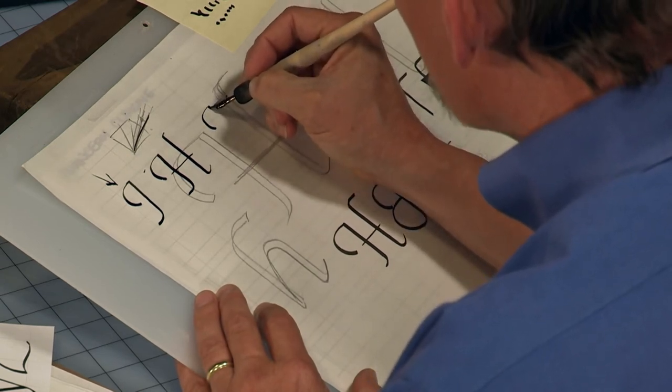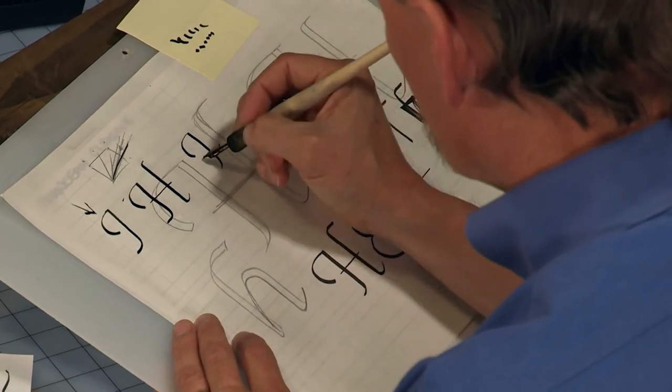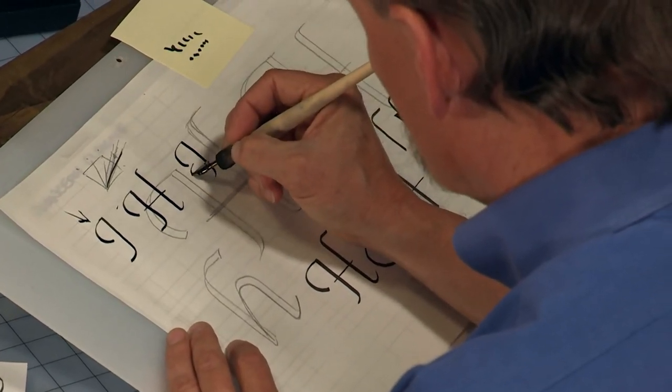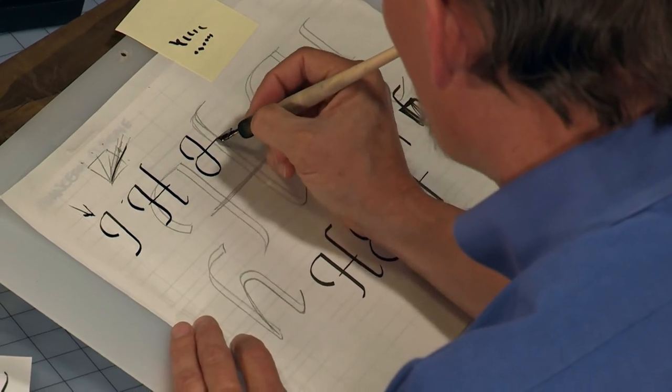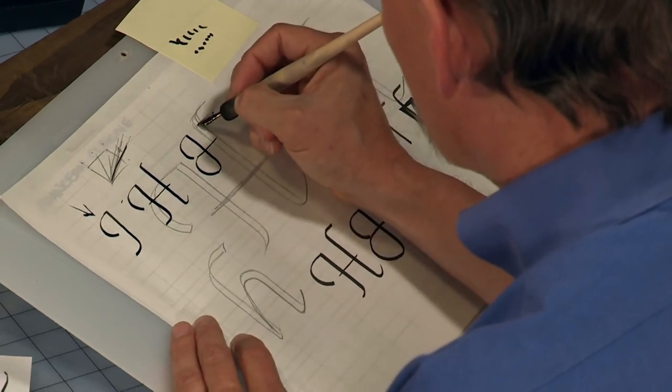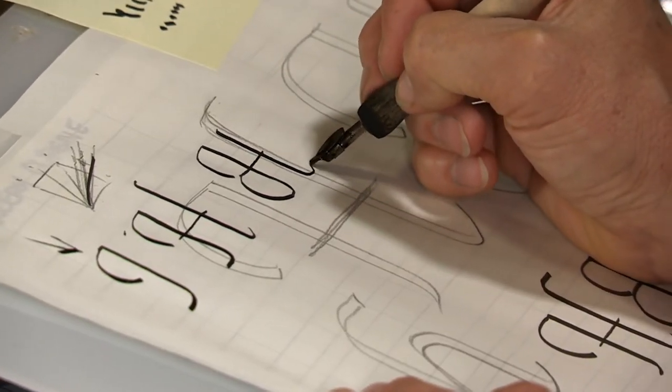Let me go ahead and do the variation on the capital H. I'm going to do this using two strokes. There's one stroke and then the second stroke this way and then the crossbar. I'll make this part of the H normal height coming down and kicking out a little foot.